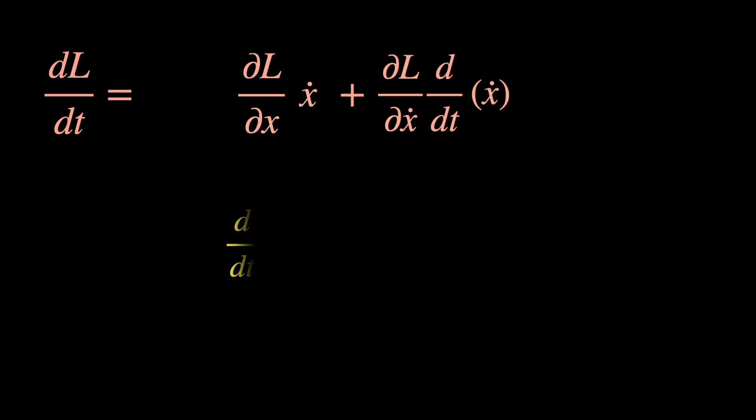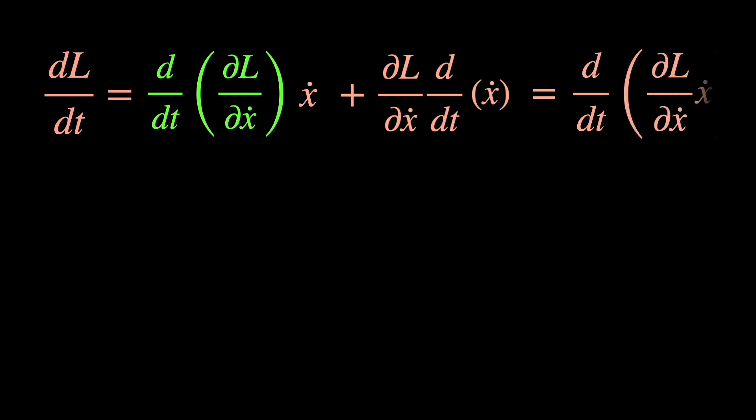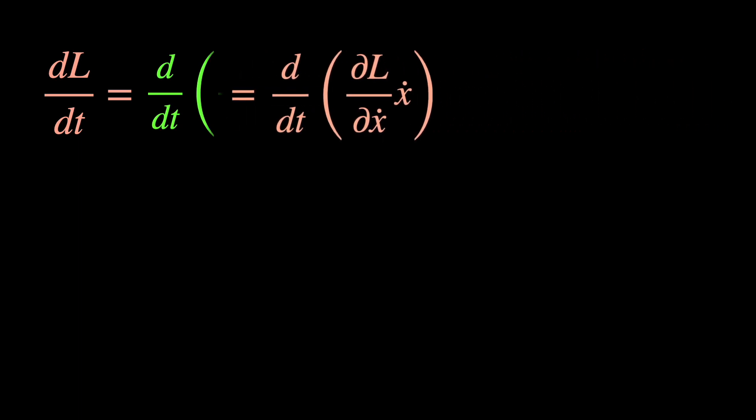Now, employing the Lagrangian's equation, we can replace the del L del x with d dt of del L del x dot. This lets us write the whole of the right hand side as a total time derivative d dt of del L del x dot times x dot. So, the total time derivative of L equals a total time derivative of del L del x dot times x dot.